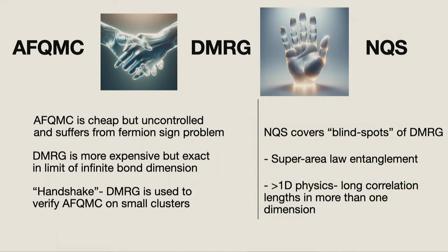The question is: what can neural networks bring to this story? The argument for neural networks is that they can cover the blind spots of DMRG. DMRG is a quasi-1D algorithm and matrix product states always have a finite correlation length. So if the entanglement scaling is super area-law (as in some gapless spin liquids) or if the physics is really two-dimensional with long correlation lengths in both dimensions, these are cases where DMRG might fail and we might need neural networks to check DMRG.